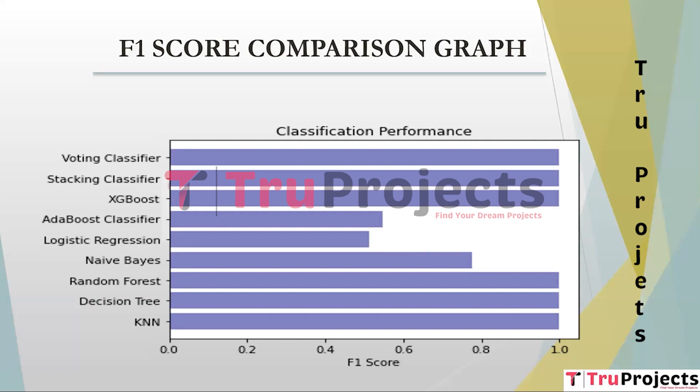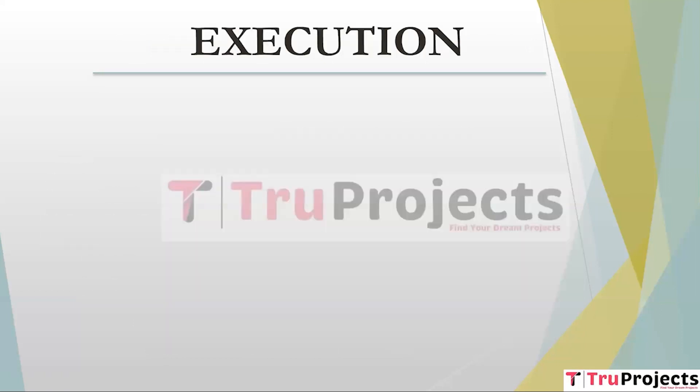The F-score is calculated as two times the product of precision and recall divided by the sum of precision and recall. It provides a single metric that balances precision and recall, making it useful when we want to consider both false positives and false negatives in the evaluation.